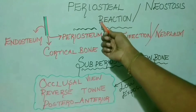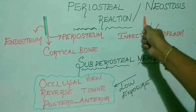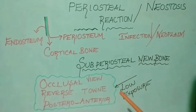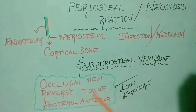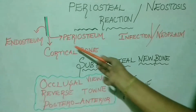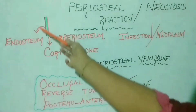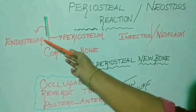Today we're going to study about different patterns of periosteal bone reactions. Periosteal reaction is also known as periosteal neostosis. The basic structure of bone has been discussed previously in a video on osteomyelitis. As seen in this diagram, cortical bone is lined by periosteum on its outer surface and endosteum on its inner surface.